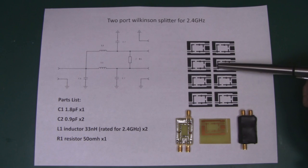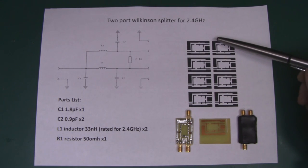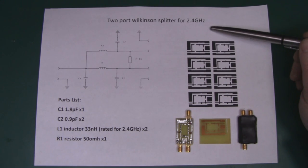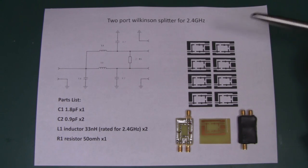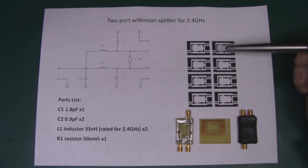In this video, I want to show you how to build a simple Wilkinson splitter. This is a two-port splitter and what it will enable you to do if, say, on your FPV setup, your receiver only has one input for one antenna.